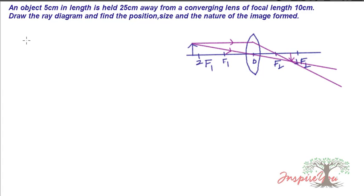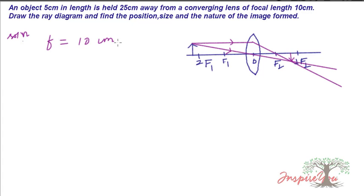Given: focal length f is equal to 10 centimeters. Since it is a convex lens, focal length is positive, so f equals positive 10 centimeters. Object distance u is equal to 25 centimeters.